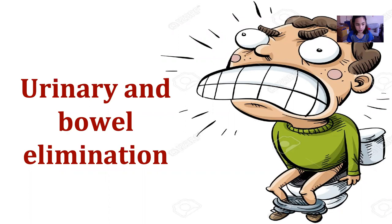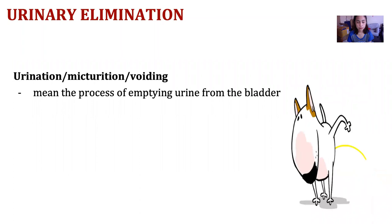This is our last discussion in Module 3 before we proceed to the last module. We are discussing urinary and bowel elimination. Let's define some terms to help us understand the procedures more easily. First, what is urination? Urination is also called micturation and voiding — it means the process of emptying urine from the bladder, or in short, pag-ihi.